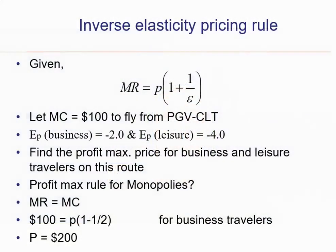This video will discuss the inverse elasticity pricing rule for a monopolist to maximize their profits. It will show you how a monopolist uses this rule to determine the optimal price. From a previous video, we derived this relationship between marginal revenue, price, and the price elasticity of demand (epsilon). I encourage you to watch that video to see how we arrived at this formula.